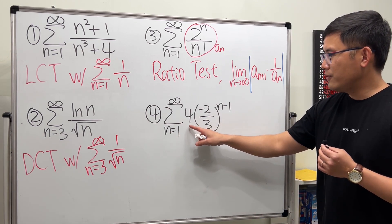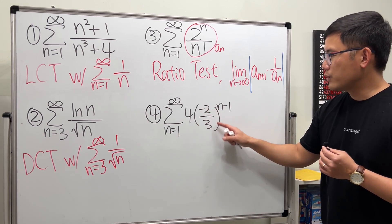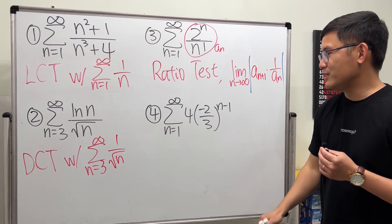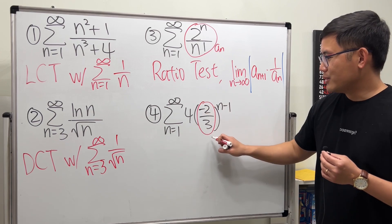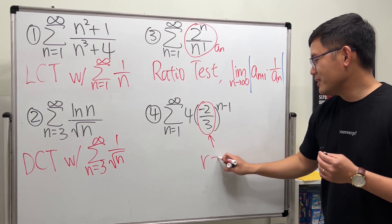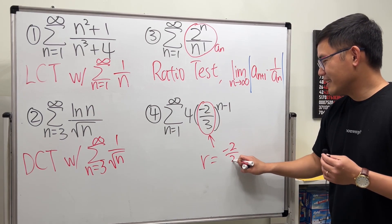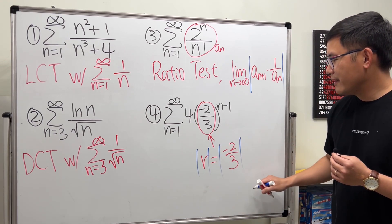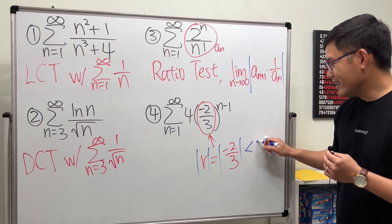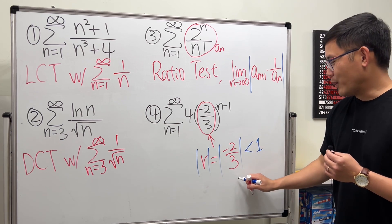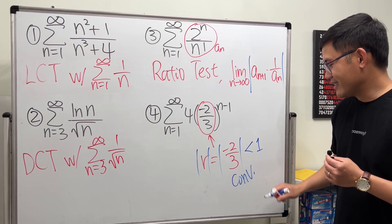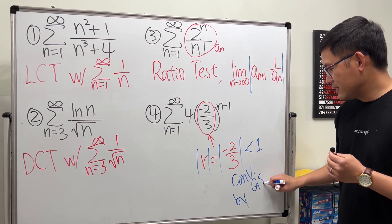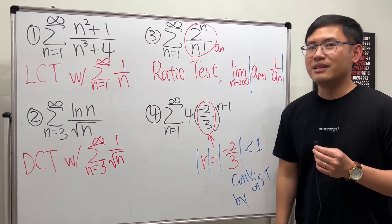Number four: this is a number raised to the (n−1) power — a very nice geometric series. The common ratio is −2/3, and the absolute value of the common ratio is less than 1. That's the full solution: converges by the Geometric Series Test.